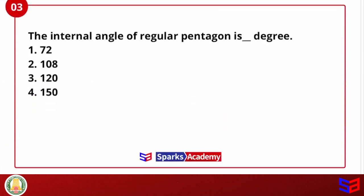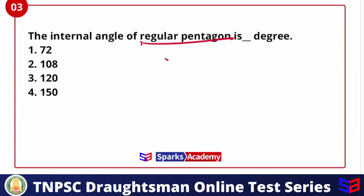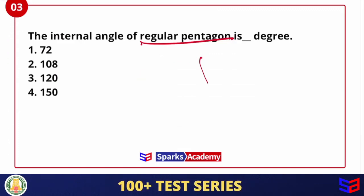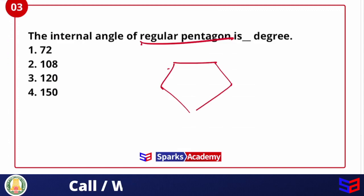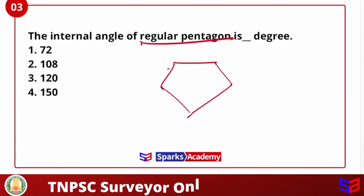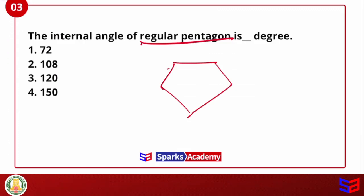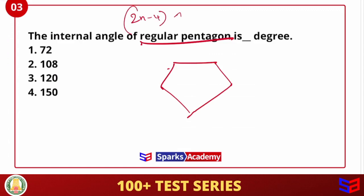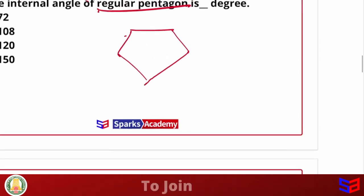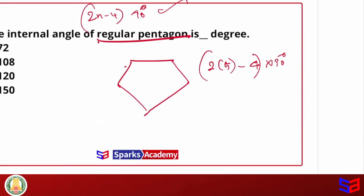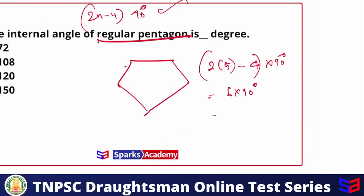Next question: The internal angle of a regular pentagon is how many degrees? A regular pentagon has five sides. To find the sum of internal angles, we apply the formula: (2n − 4) × 90 degrees. Substituting n = 5: (2×5 − 4) × 90 = 6 × 90 = 540 degrees.